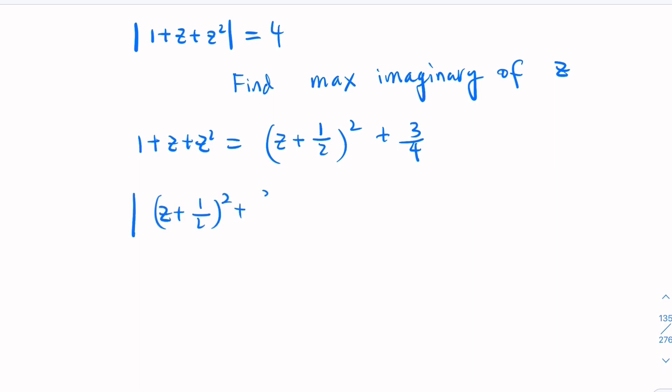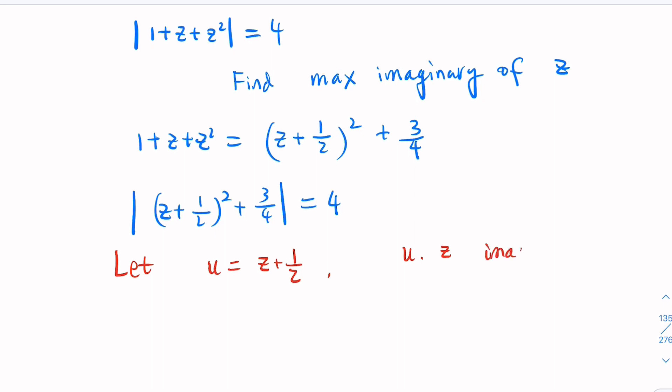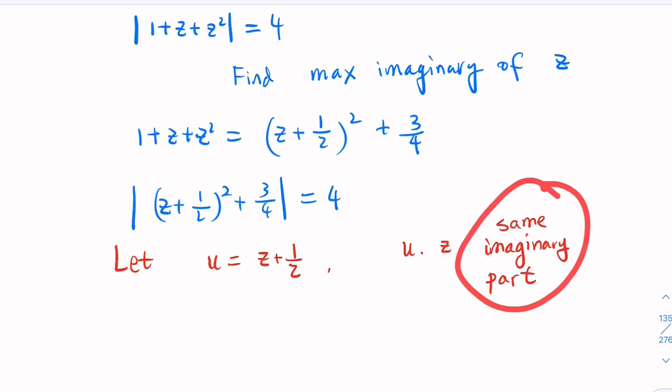Here is the important trick: let u equal z plus 1 half. Now u and z, the imaginary part is the same. That's the important observation. If we rewrite the equation, u squared plus 3 over 4 equal 4. This and that are equivalent.